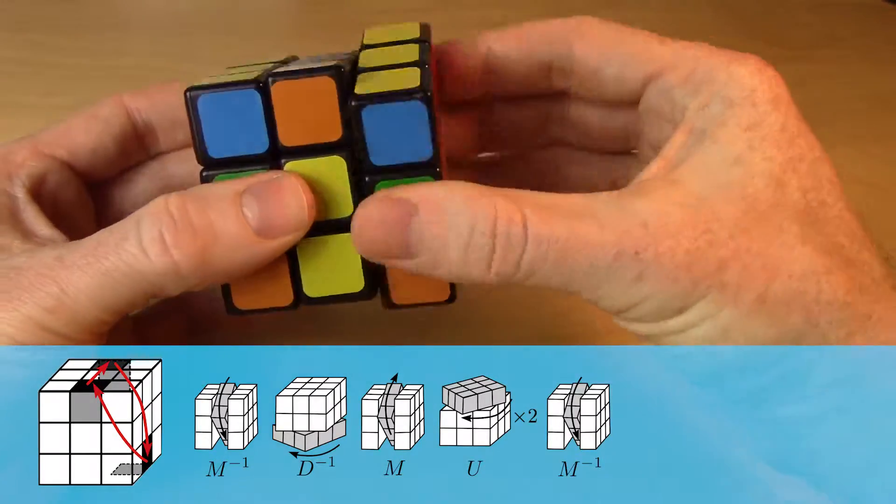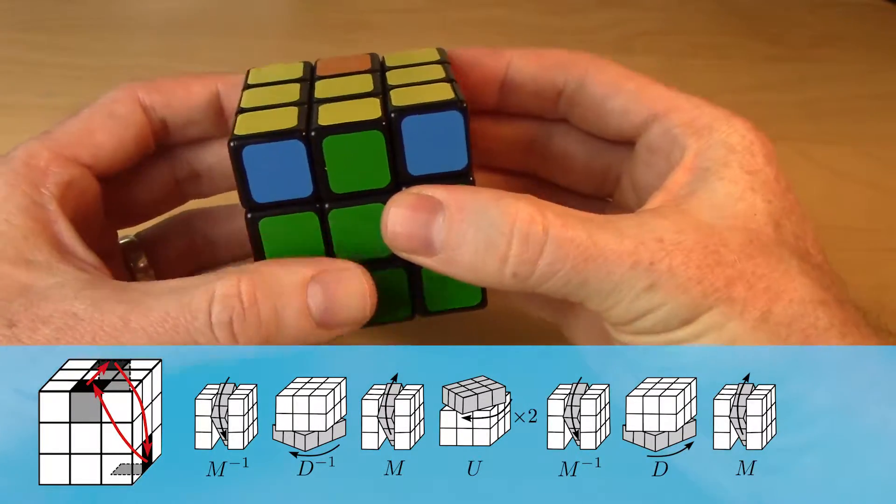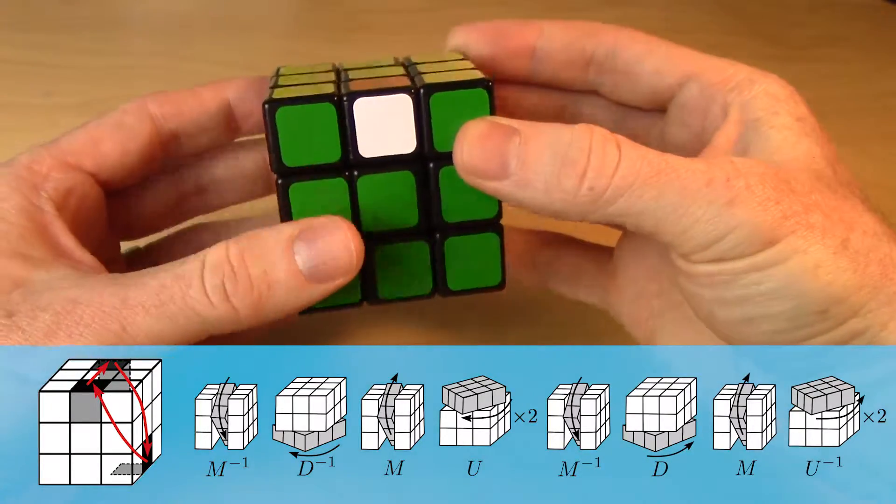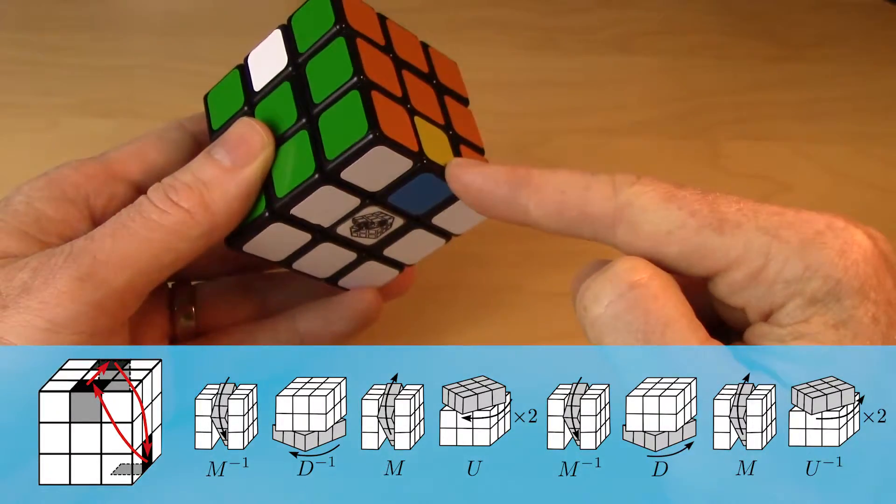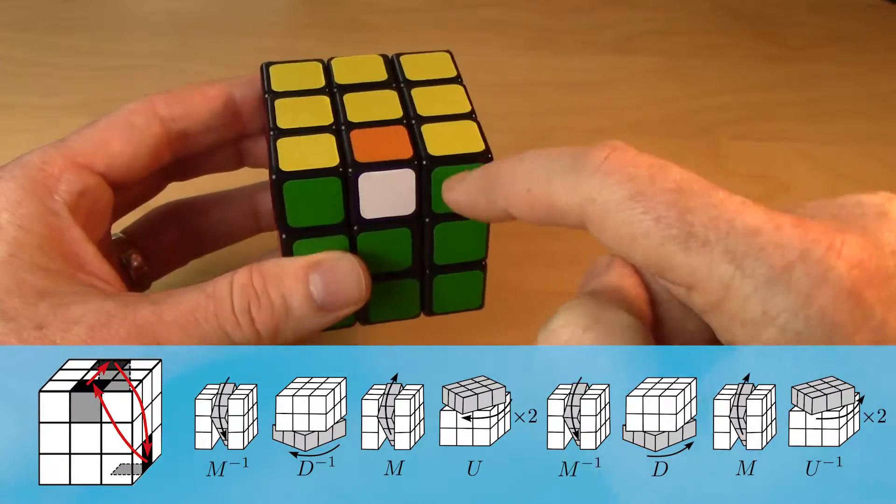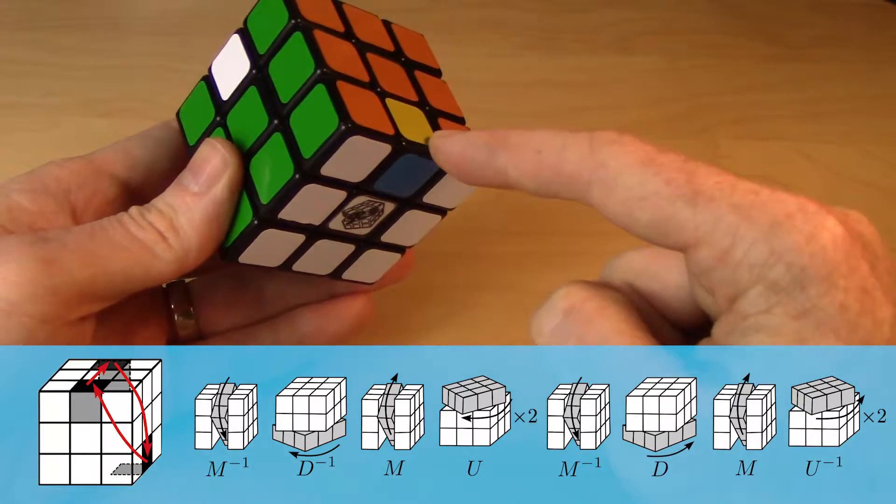So then I send it down, across, send it back up, and then undo that move, that up move. And so what we see is that this piece, orange white, moved there. Yellow green moved back here. Blue yellow moved down there.